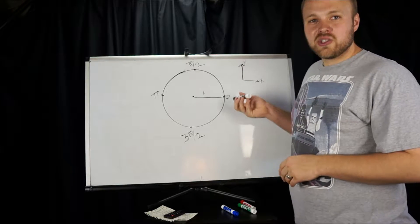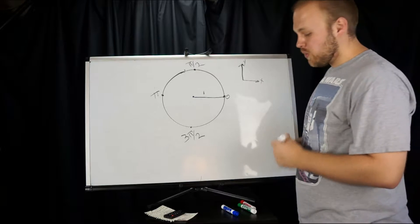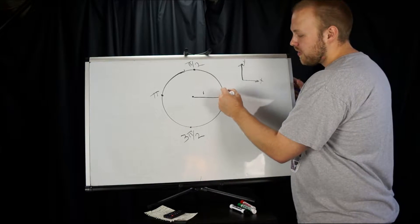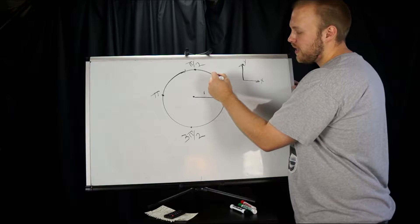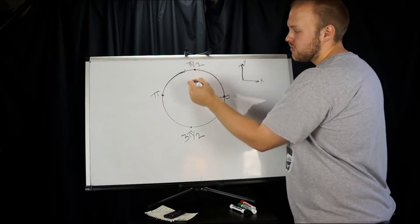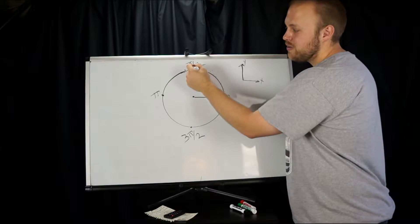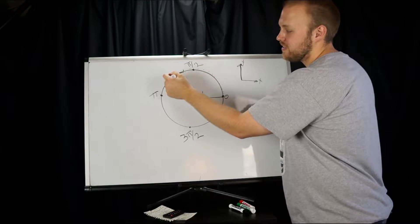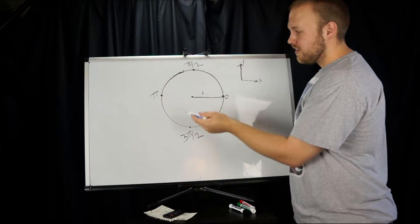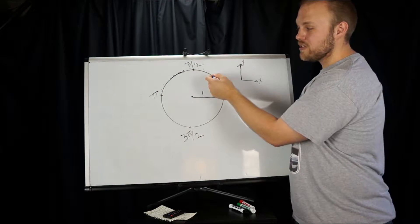So picture this like a track, and you're a guy just walking around the track. As you travel around this circle, sine is your Y component. So now you're at one. And cosine, which we're not going to talk about after this, is your X component. And those two together give you your position on that circle.